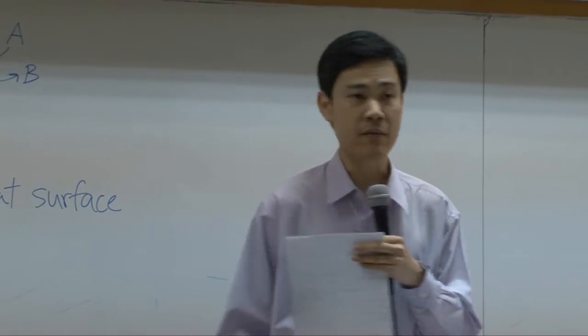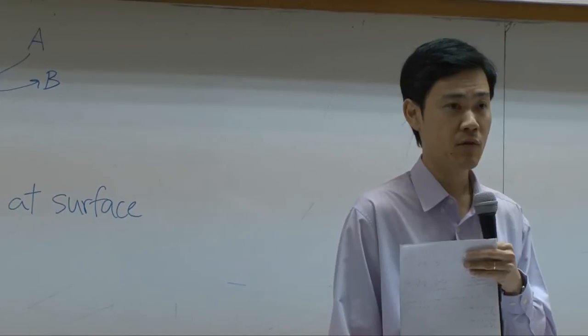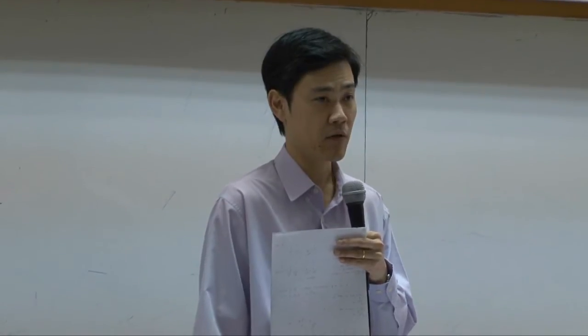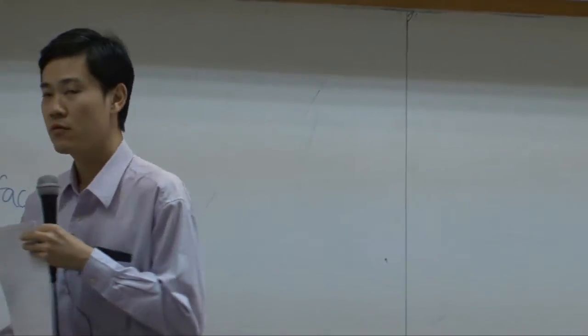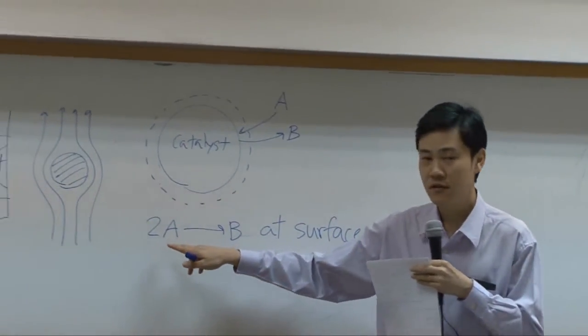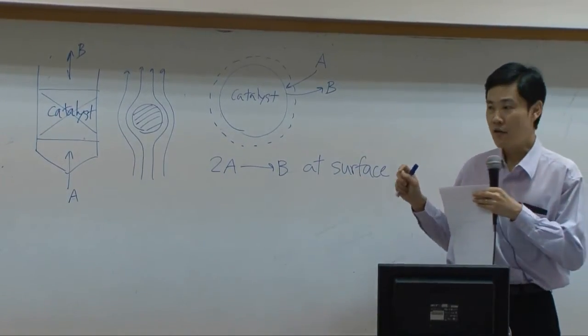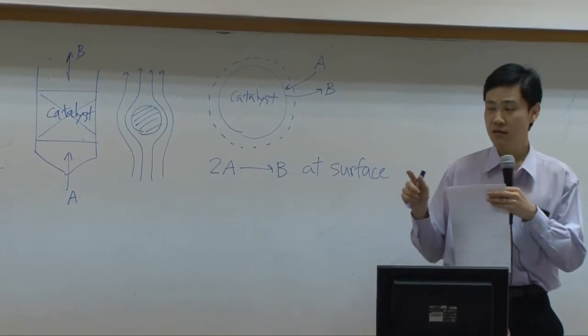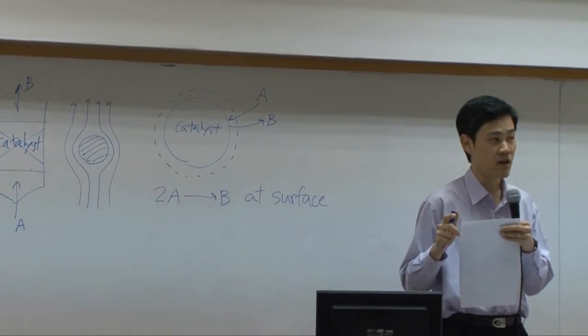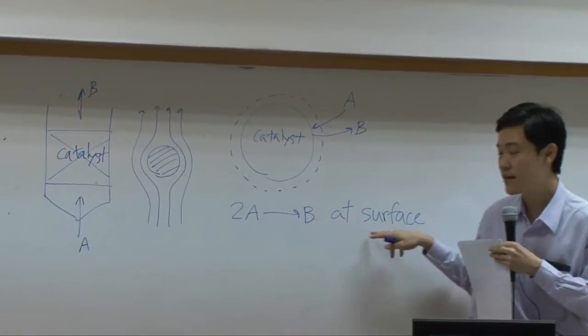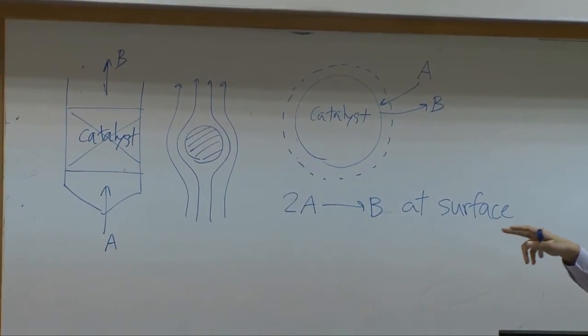For today we have another example on the mass balance, and the example is a packed bed reactor. Do you know packed bed? From kinetics you should know packed bed already. In this example we're going to convert species A into species B using a reaction. However, the reaction takes place only in the presence of catalyst. That means reaction takes place at the surface of catalyst. Without catalyst there will be no reaction.